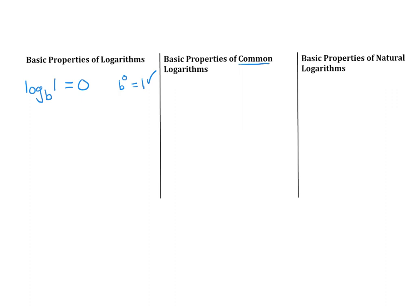I'm going to repeat these properties for common logarithms and natural logarithms. Common logarithm means base 10, so log of 1 equals 0 because 10 to the power of 0 is 1.